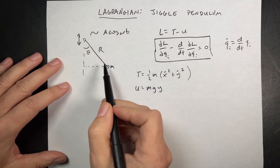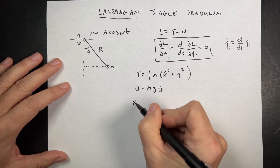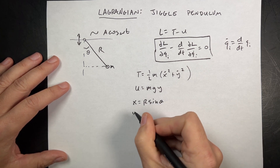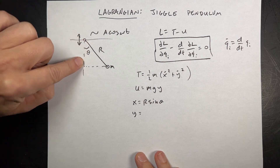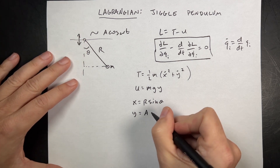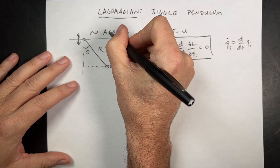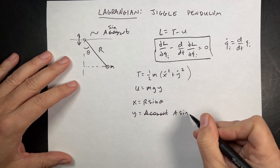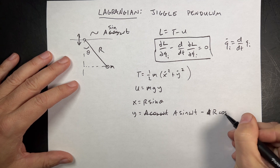With the origin at the pivot, x is just r times sine of theta. y, on the other hand, is going to be negative r cosine theta, but I have to add in the jiggle part. So y is actually going to be a sine omega t minus r cosine theta. I'm using sine so that when t equals zero, it starts at zero.